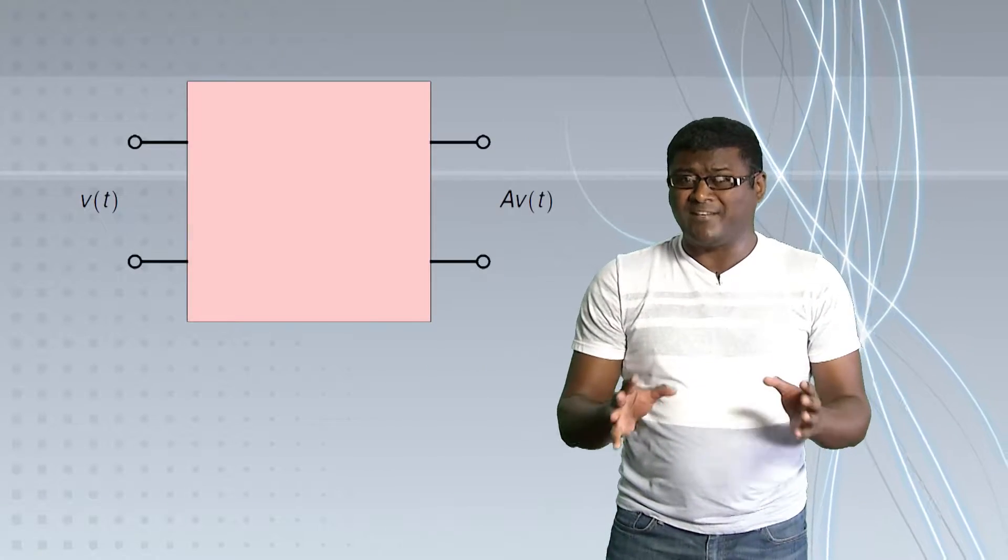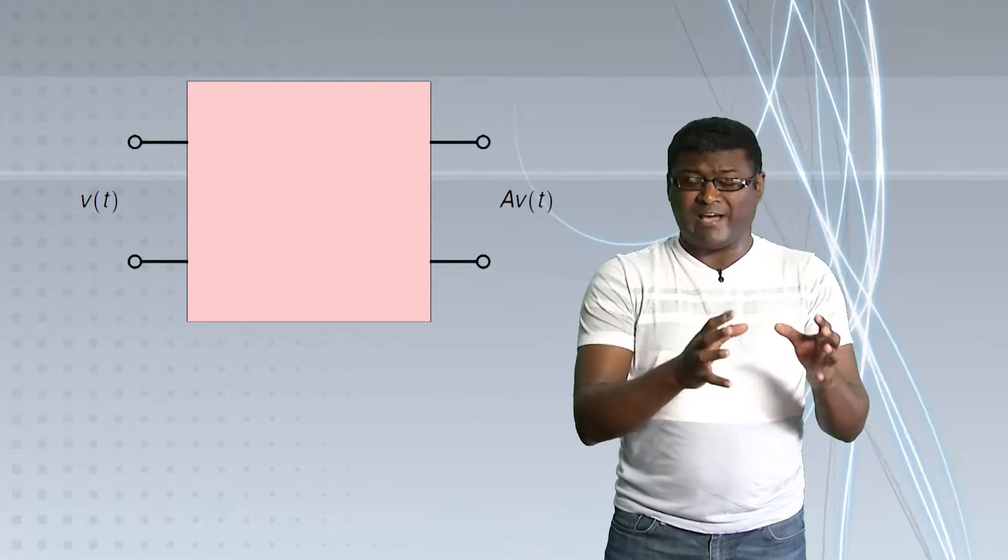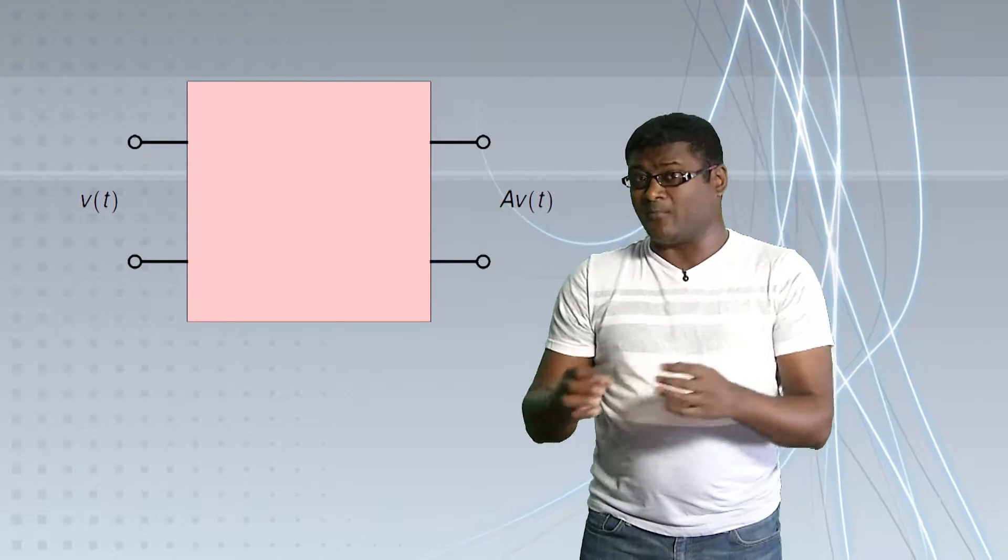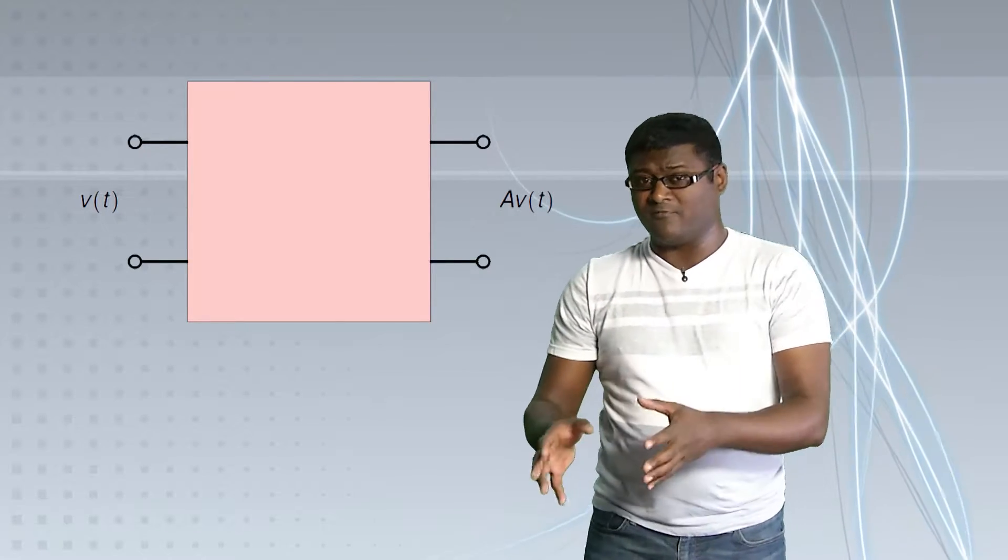So in this video, we are going to talk about amplifiers. And more specifically, we are going to talk about very commonly available ICs called operational amplifiers. At a fundamental level, what is amplification? If you have any input V(t), the output should be some constant A times V(t).